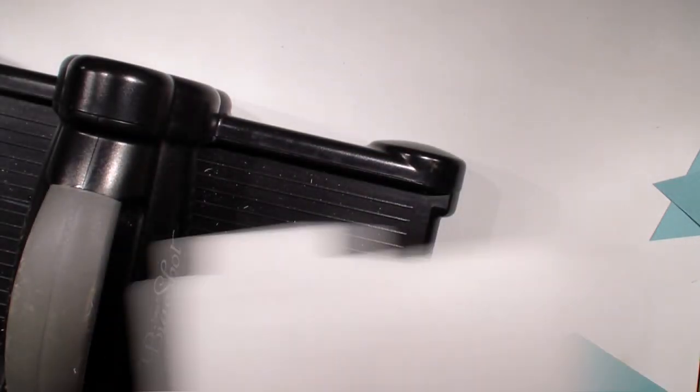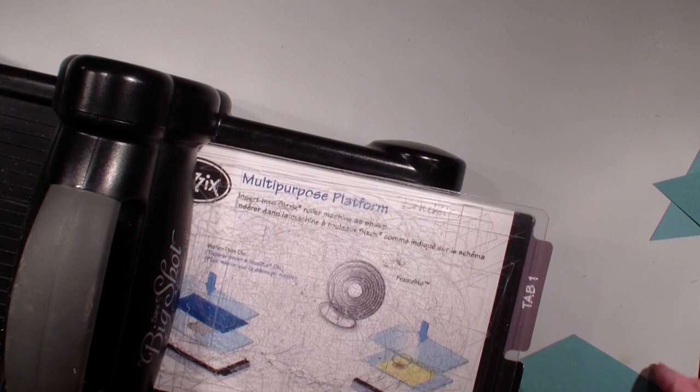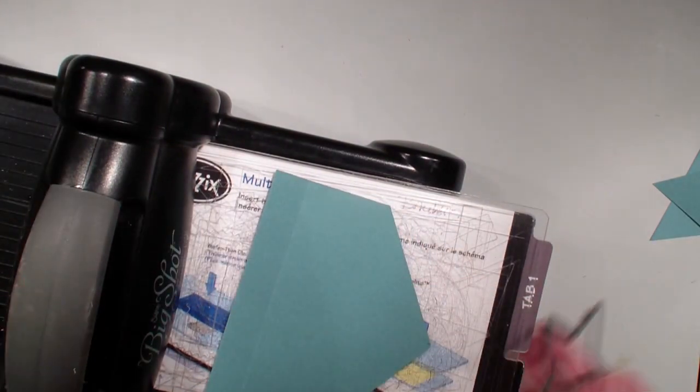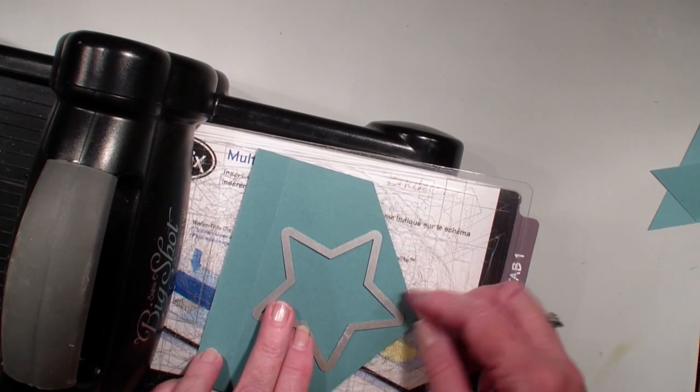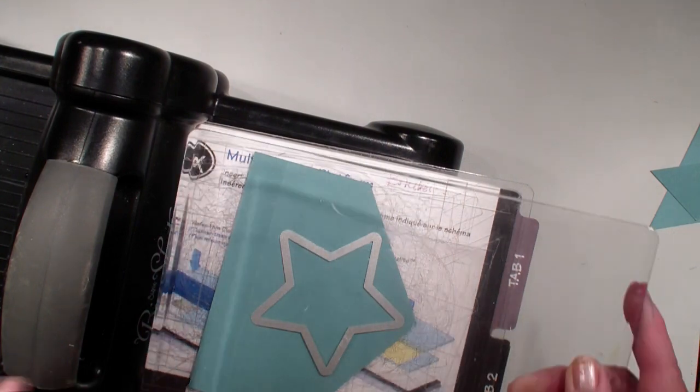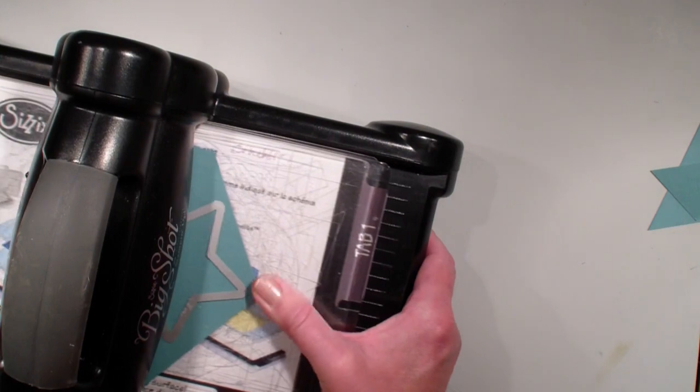All the details will be on my blog stampingwithlinda.com. Going to bring in my big shot, I am going to be using my star framelit first and run that through the big shot. I just want to kind of line that up like so in that triangle, going to run that through on the big shot.